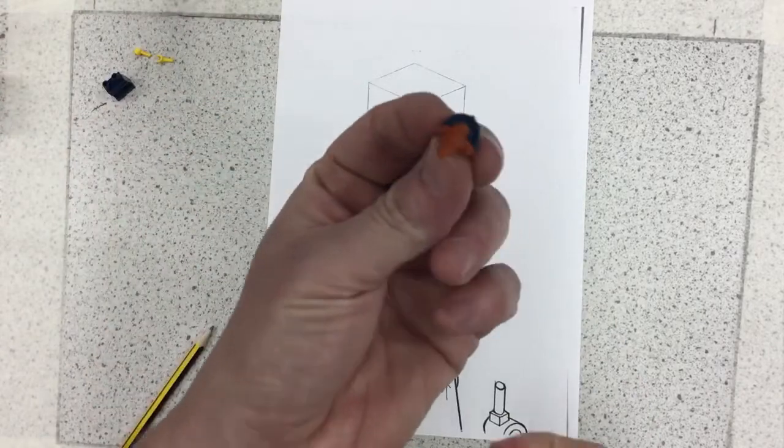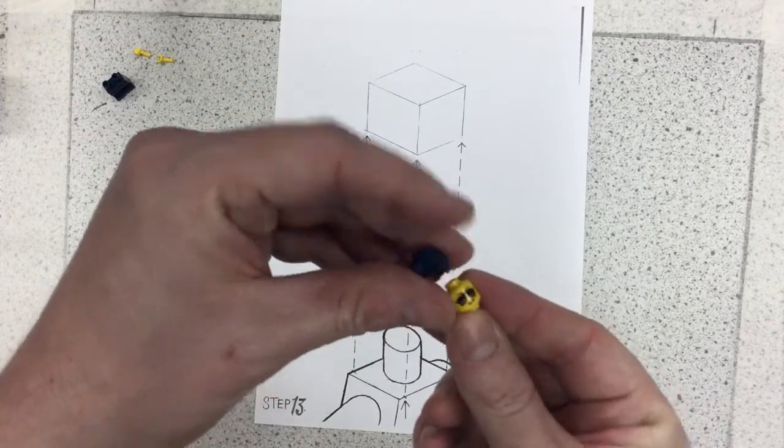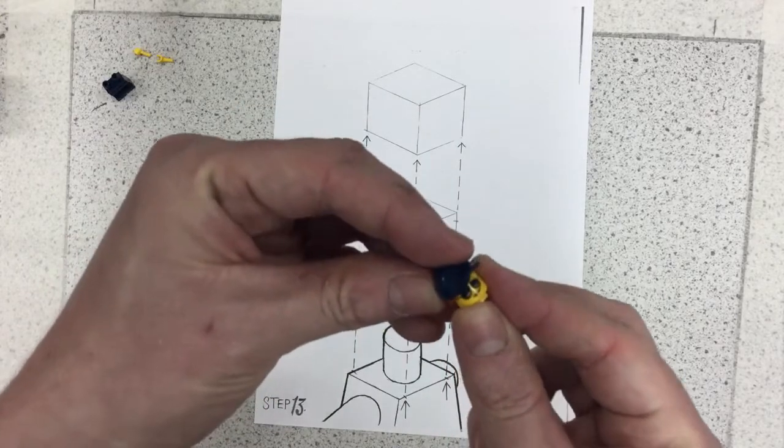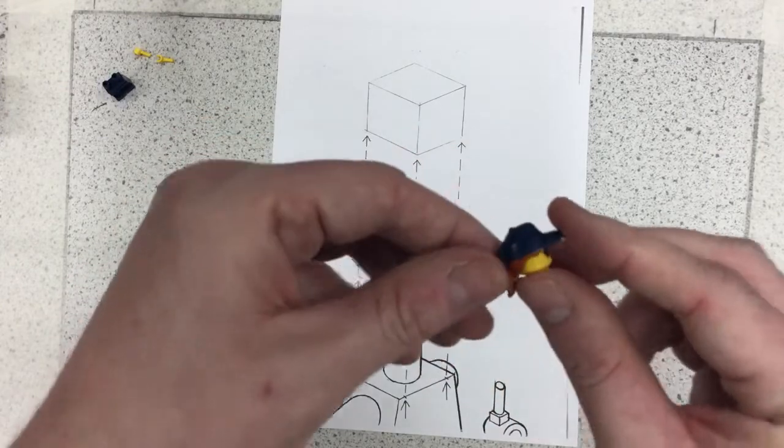Now this cap actually had a ponytail on the back. I'm not gonna bother doing that just because I think it's complicated enough. If you want to add something like that you absolutely could but just for my tutorial I haven't. So that clicks on like so.